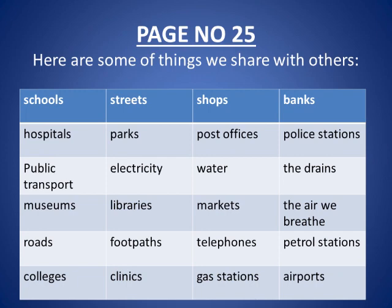Post offices — a place where we post our letters and they deliver that letter to the respective person. Police stations — a place where we report when something illegal happens in a community. Public transport — for the general common people of the community. Electricity, water, trains, museums — a place where old historical things are kept. Libraries — a place with a good collection of books that we can read whenever we want. Markets, the air we breathe, roads.